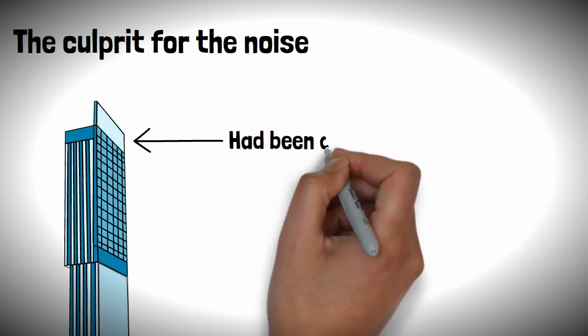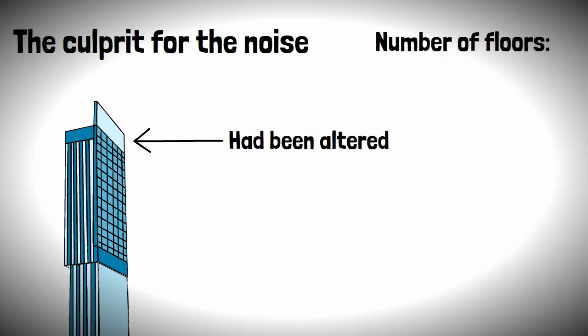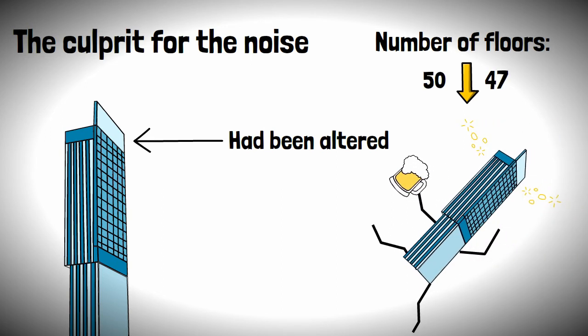The culprit for this noise is the roof's glass blade, which had been altered as the number of floors had been reduced from 50 to 47 due to the likelihood of the building swaying too much in the wind.